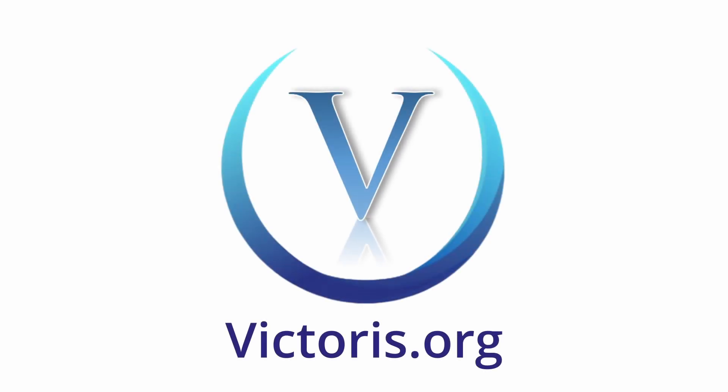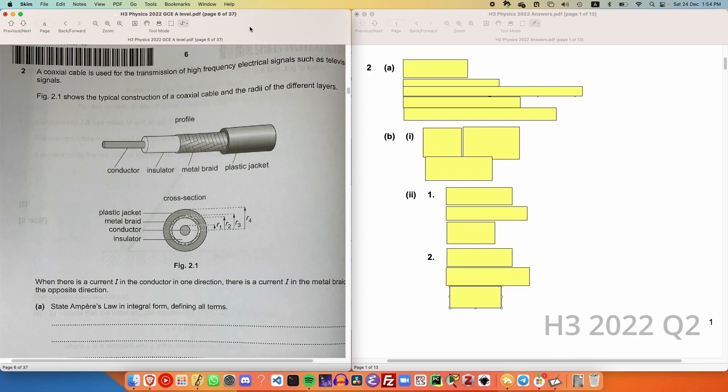The following content is supported by Victoris.org. Now moving on to the second question, we're given a coaxial cable made of concentric cylinders made of different materials. We're asked to state Ampere's law in integral form.